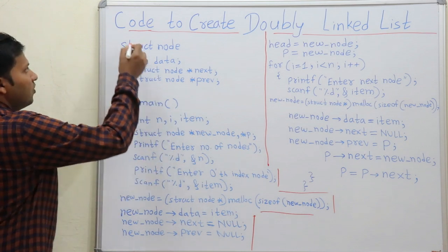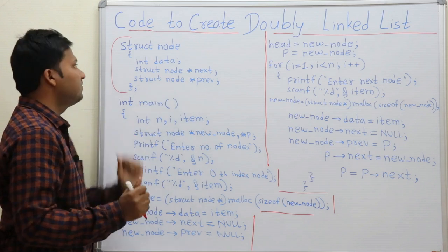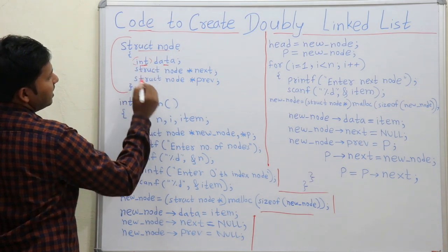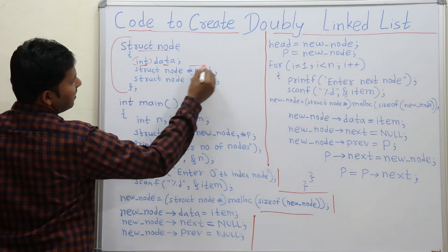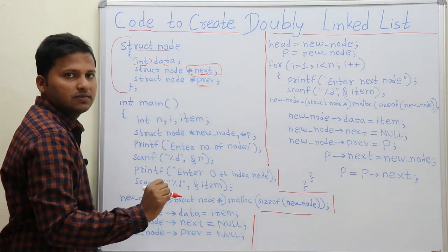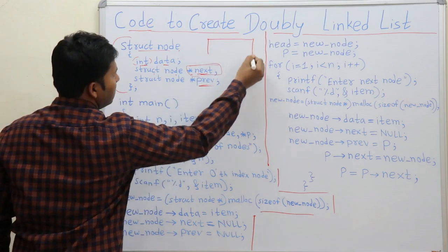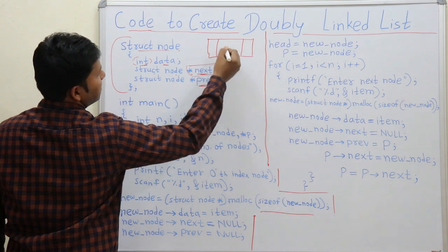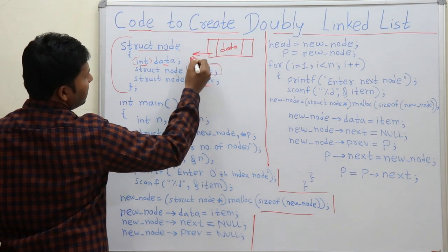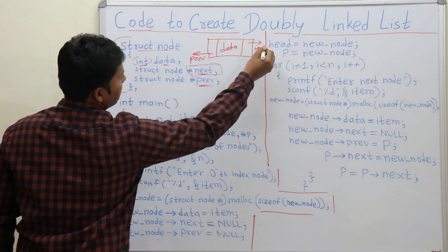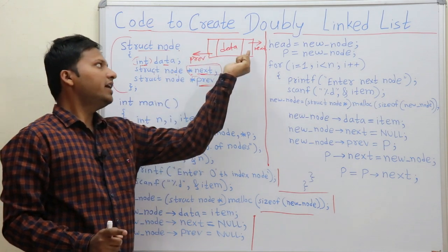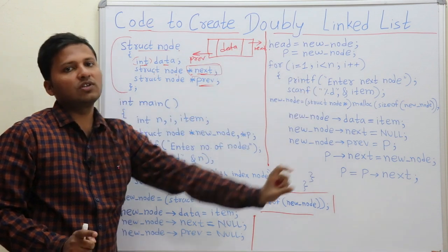The structure for doubly linked list is here as we have seen in the previous video. There is a struct node with a data field, which can be of any data type. Then there is a struct node star next — the next pointer — and a previous pointer. The previous field stores the address of the previous node, and the next field stores the address of the next node in the linked list.